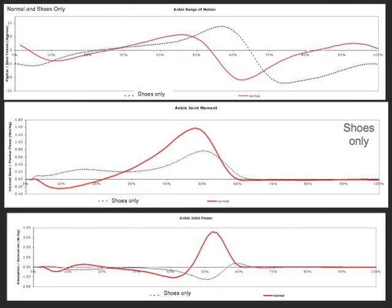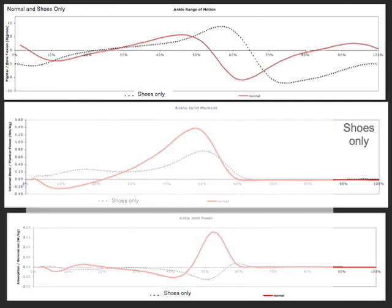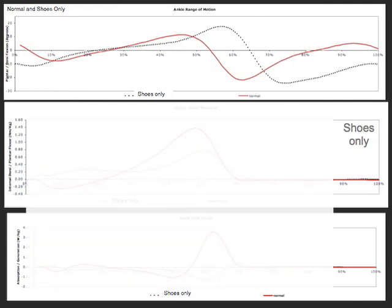Bear with me, this gets a little bit crazy. But if you refer to the range of motion plot on the top, you'll notice that there is a delay, an excessive dorsiflexion in pre-swing, and drop foot through swing phase and initial contact.